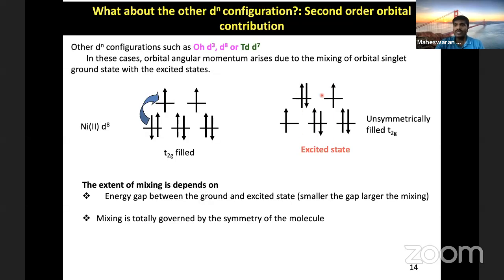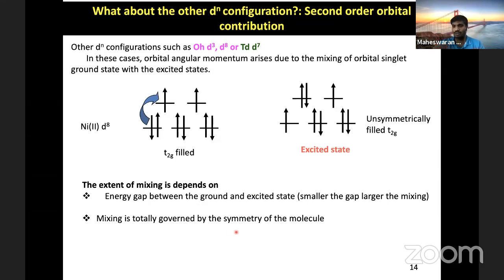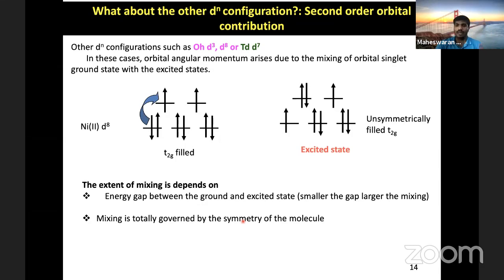But the system has a spin-orbit coupling only if the ground state mixes with the excited state. This mixing depends on the energy gap between the two systems — the smaller the gap, the larger the mixing. Which excited state mixes with the ground state is absolutely controlled by the symmetry of the molecule. So the geometry and symmetry of the molecule determines the spin-orbit coupling contribution.